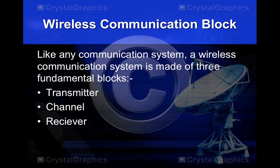Now we'll talk about the basics of wireless communication — the wireless communication block. Like any communication system, a wireless communication system is made up of three fundamental blocks: transmitter, channel, and receiver. All three blocks are explained further in this presentation, since I have used all three blocks for my project as well.